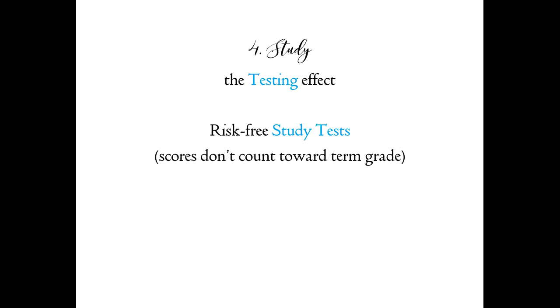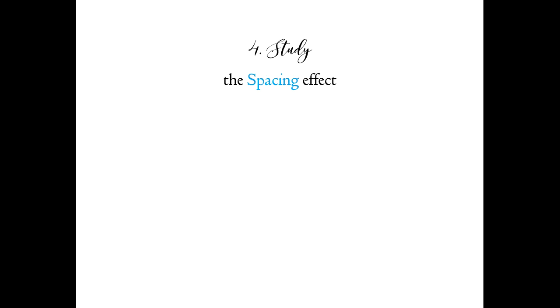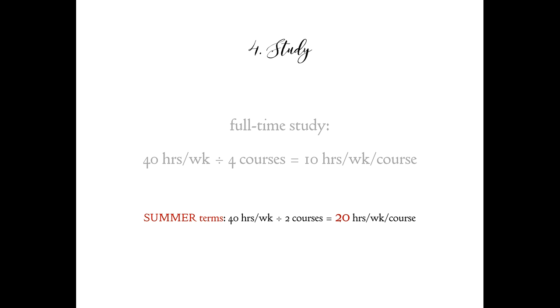The second effect you can exploit is what psychologists call the spacing effect. Let's start from the axiom that being enrolled as a full-time student is roughly analogous to holding down a full-time job, which typically represents a total time commitment of 40 hours per week. If you're taking a full load of four four-credit courses, dividing those 40 hours by four courses gives 10 hours per week per course, or, in the summer, 20 hours per week per course. If you can succeed on less time than that, more power to you, but that is a good baseline for planning.